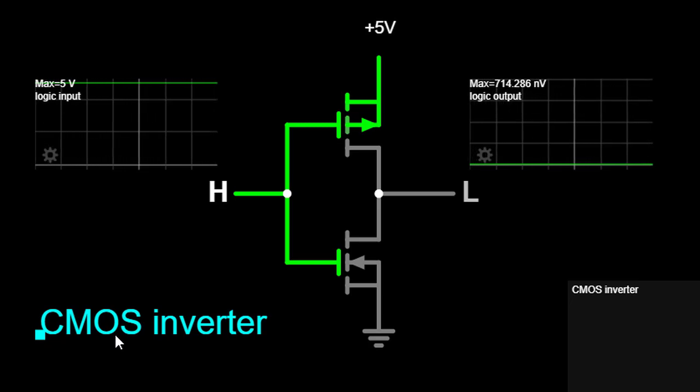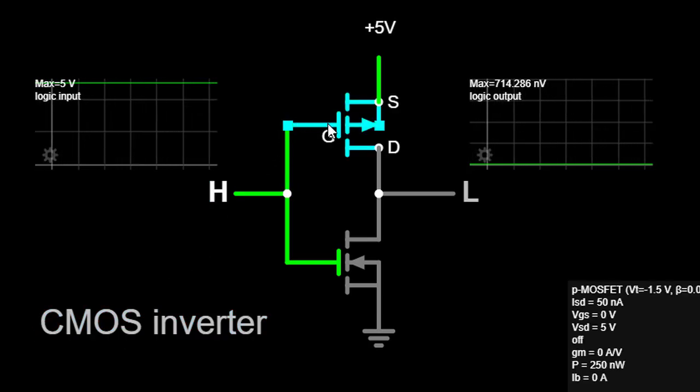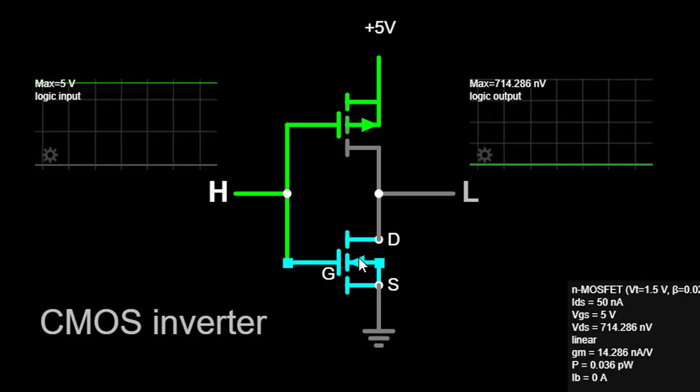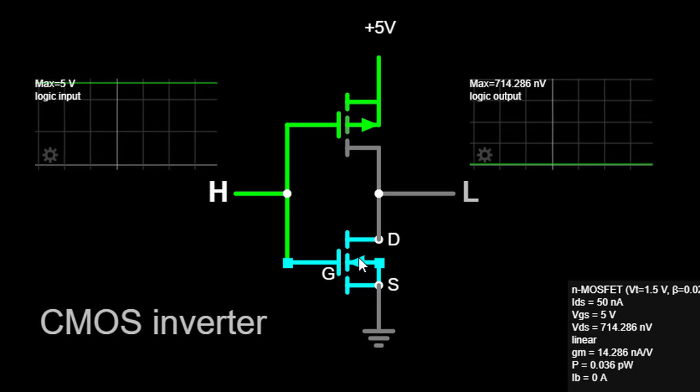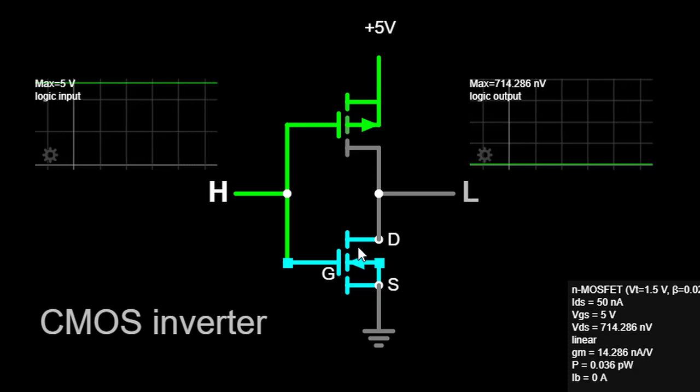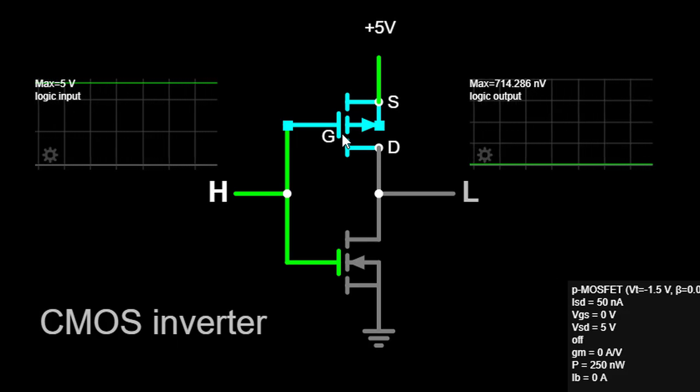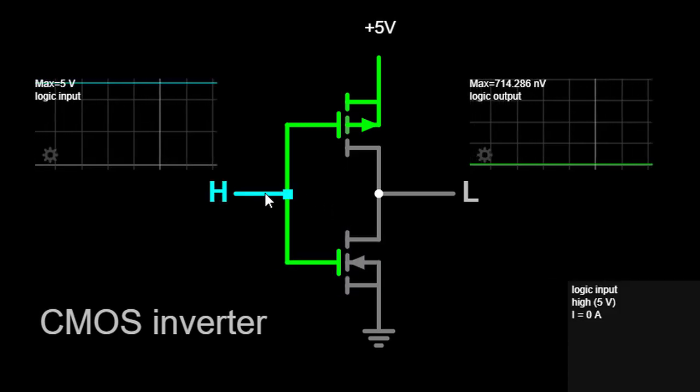Working principle. At its core, a CMOS inverter comprises a PMOS (P-type Metal-Oxide Semiconductor) transistor and an NMOS (N-type Metal-Oxide Semiconductor) transistor. These transistors are connected in a complementary fashion, meaning that when one is on, the other is off. This complementary behavior facilitates efficient switching between logic high and logic low states.